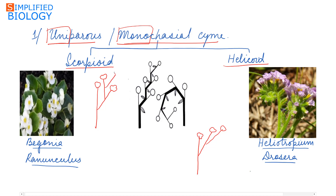The branches develop in a zigzag fashion. In the diagram, the main branch terminates by a flower, from which develops a lateral branch that terminates, and this way it develops alternately. This type is called scorpioid cyme. Examples of scorpioid cyme are Begonia and Ranunculus.